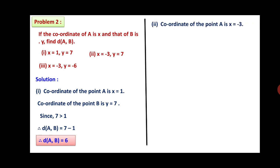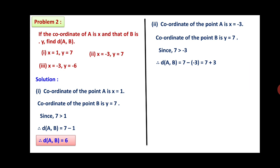Second: coordinate of point A is X equals minus 3, and coordinate of point B is Y equals 7. We know that 7 is greater than minus 3. Therefore, distance between point A and B equals 7 minus (minus 3), which is 7 plus 3. So distance between point A and B is equal to 10.